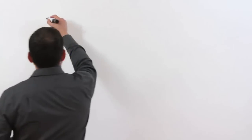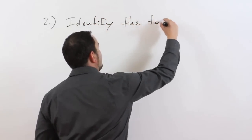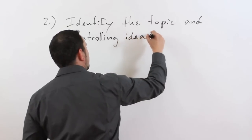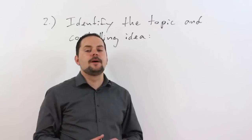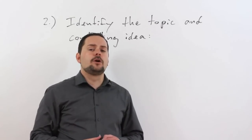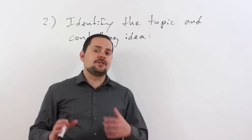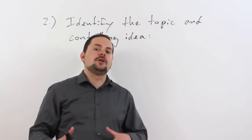After you've paraphrased the question, the second step is always to clearly identify the topic of the question and the controlling idea. The topic is always going to be what or who we're talking about — usually just one noun or maybe an adjective and a noun, something very clear and simple. The controlling idea is everything else — what we would like to know about the topic.